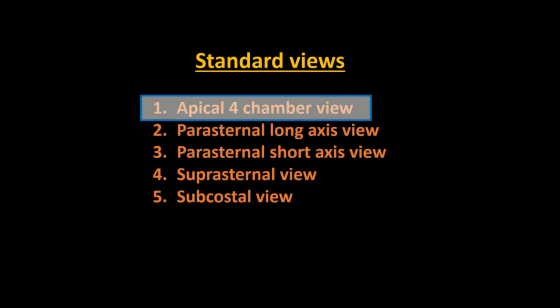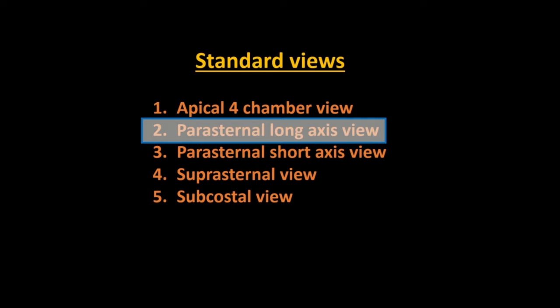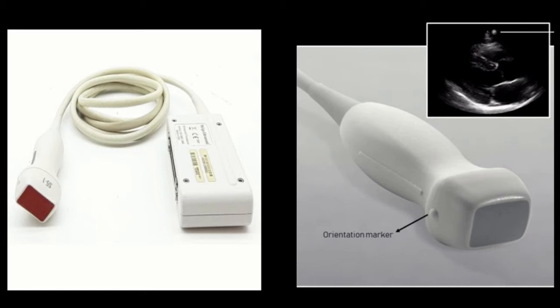The apical 4-chamber view can be modified into apical 2-chamber, 3-chamber, and 5-chamber views by tilting and changing the direction of the probe. The parasternal long axis view can be modified into right ventricular inflow view or right ventricular outflow view just by tilting the probe.